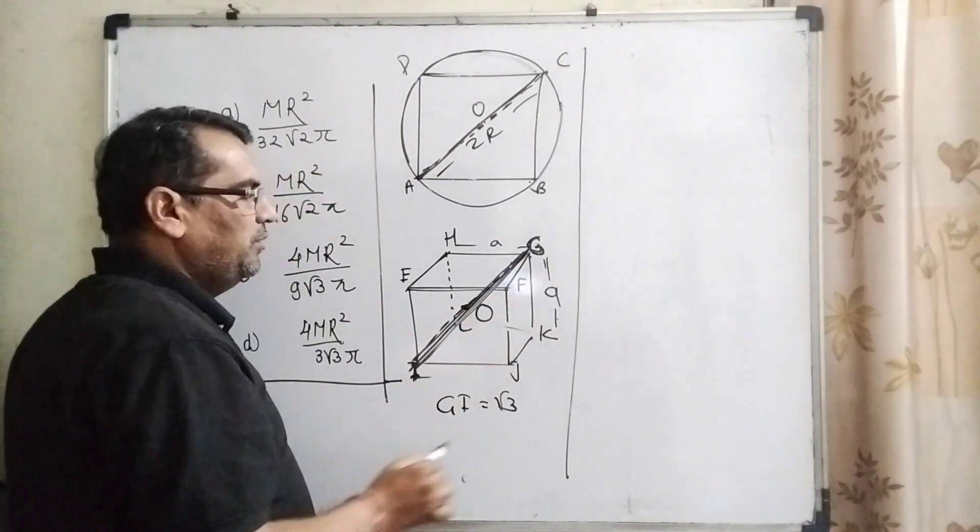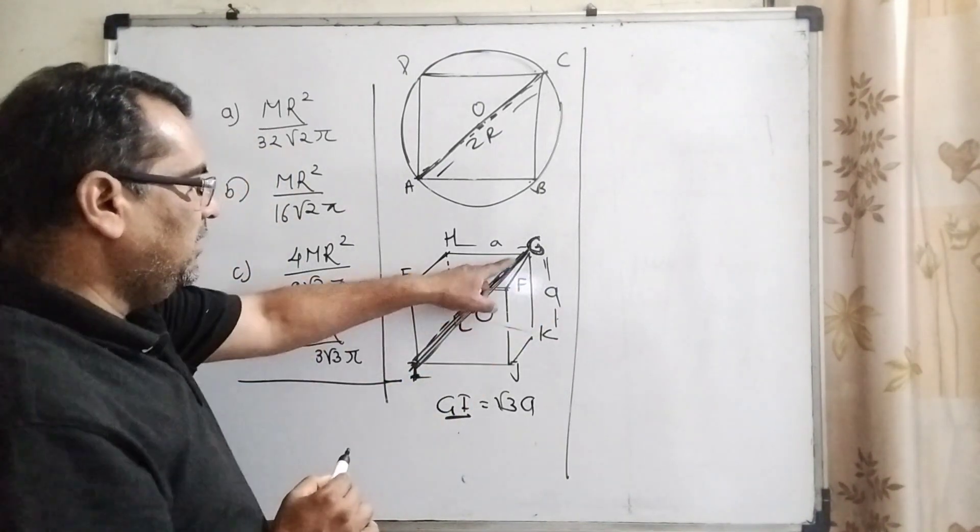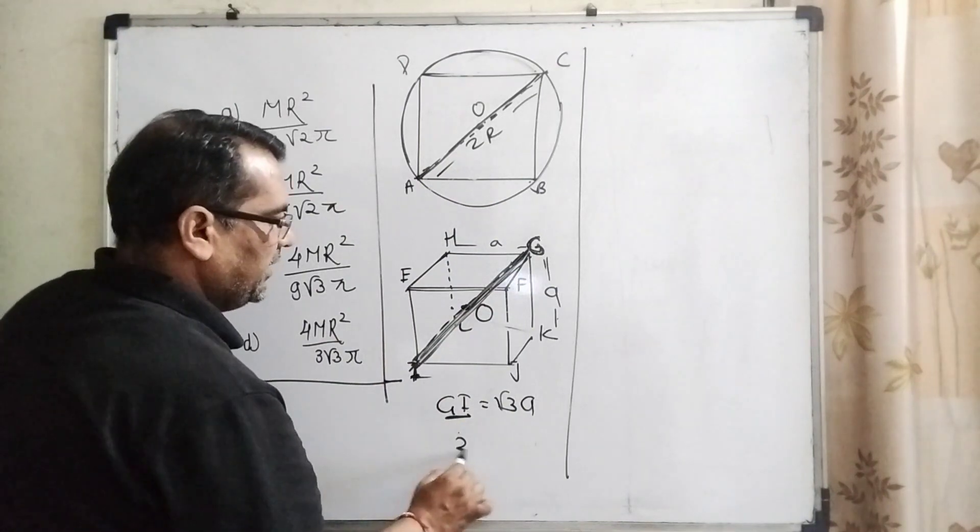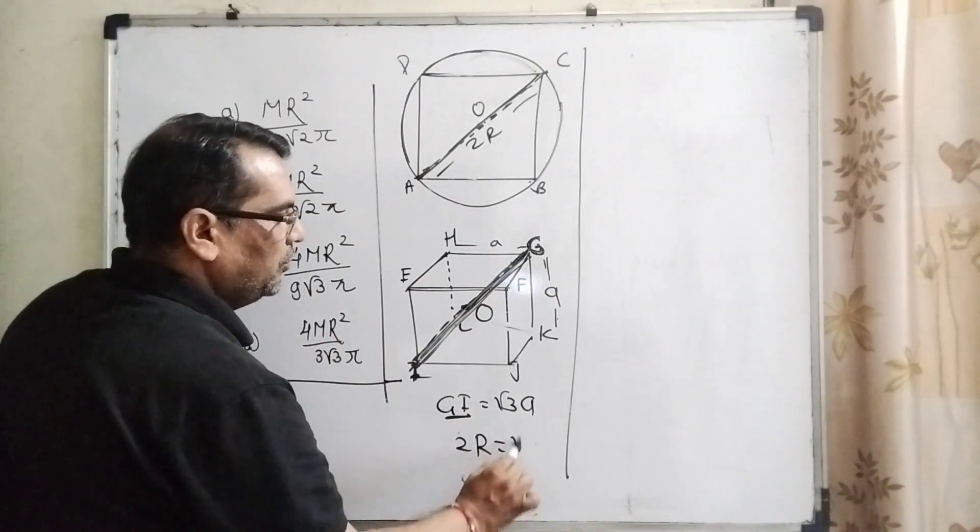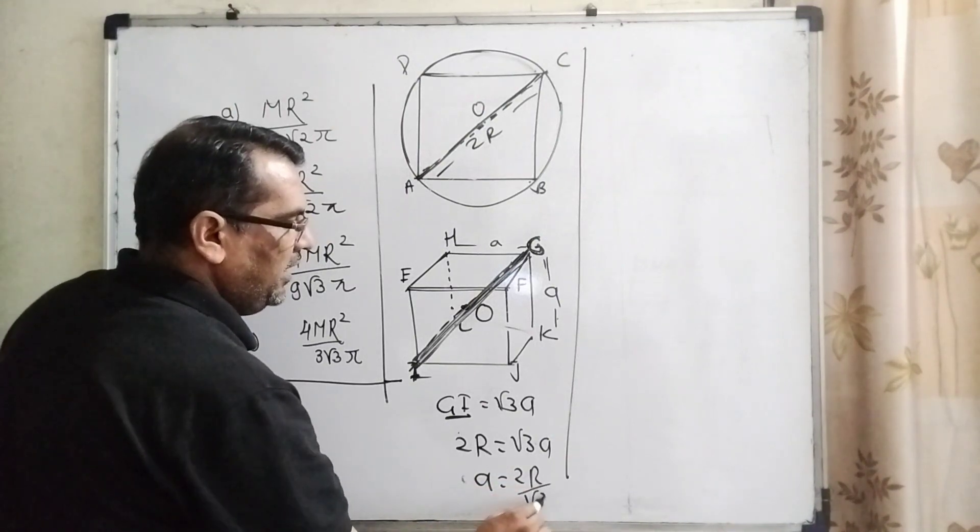Let the side of this cube be a. Then GI, what is GI? GI is the diameter of this sphere. So it can be written as 2R = √3a, therefore a = 2R/√3.